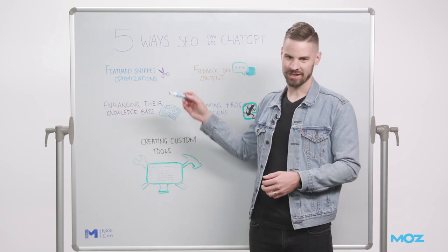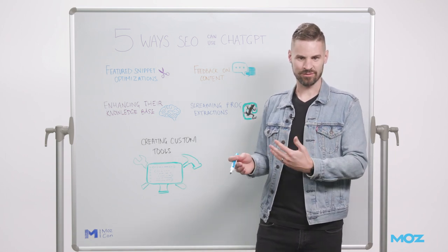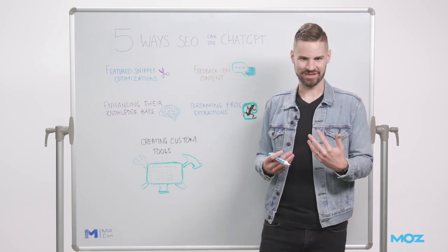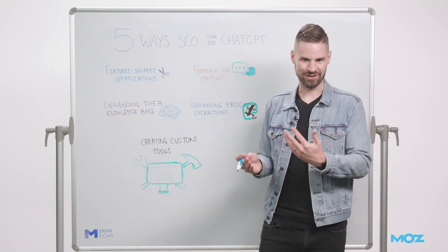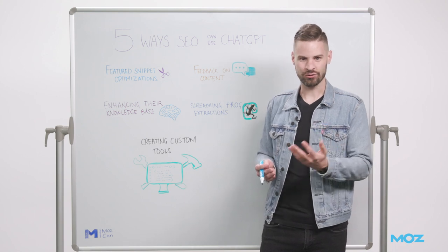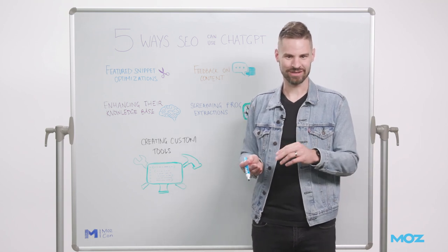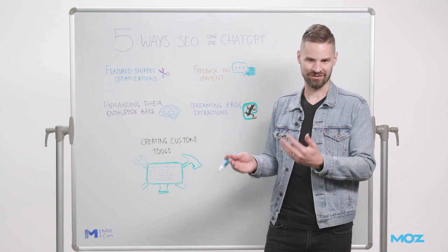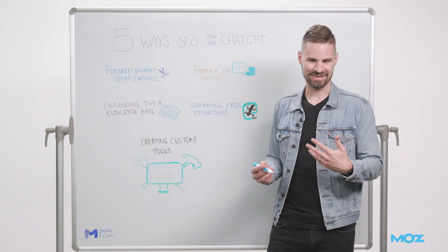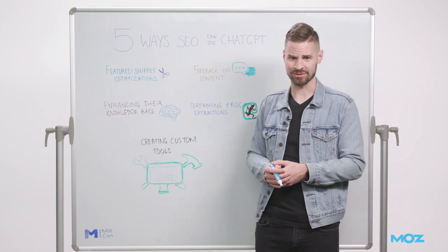The first way we're going to talk about is featured snippet optimization. ChatGPT is really good at creating succinct summaries of overall topics while capturing a lot of information. One way we've had great success is — if you're optimizing for the featured snippet for 'index funds' — telling ChatGPT to create a two to three sentence summary, always using an 'is' statement and always starting sentences with the target keyword. ChatGPT is fantastic at creating these summaries that translate well to featured snippet opportunities.